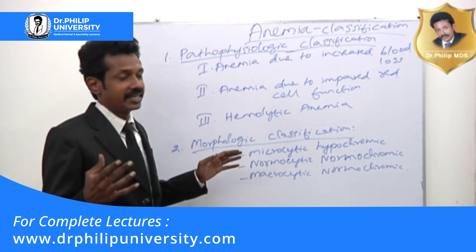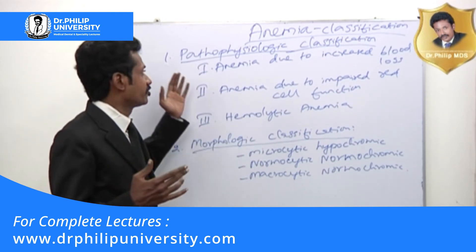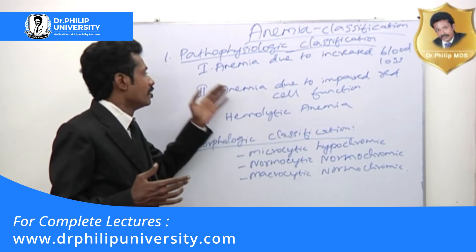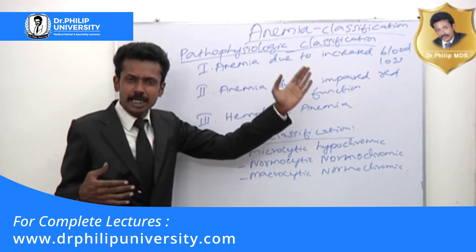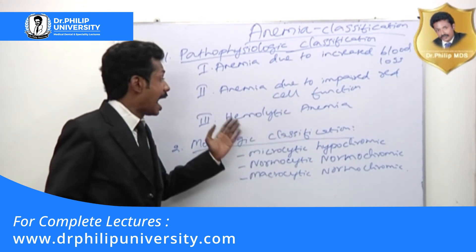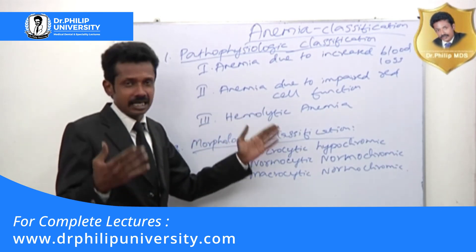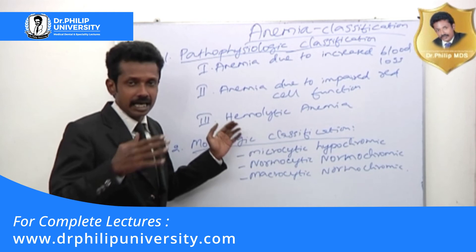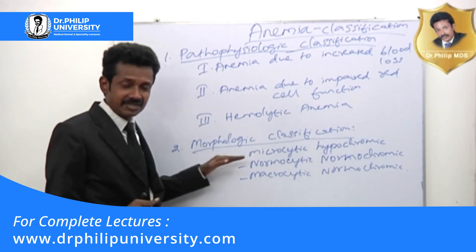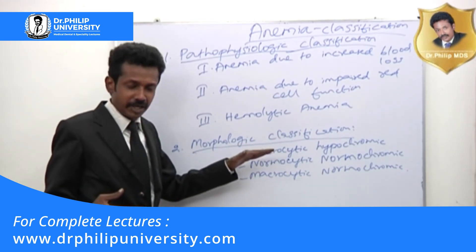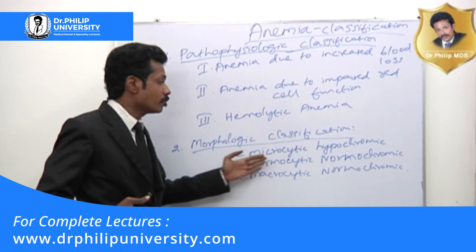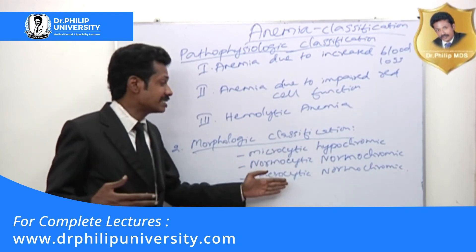So in this way we have classified anemia in two ways. The first classification is the pathophysiology classification: anemia due to increased blood loss, anemia due to impaired red cell function, and hemolytic anemia — lytic means killing, so hemolytic means blood cells are destroyed. The second classification is the morphologic classification: microcytic hypochromic anemia, normocytic normochromic anemia, and macrocytic normochromic anemia.